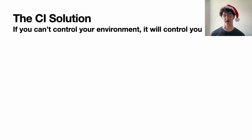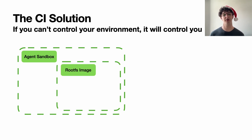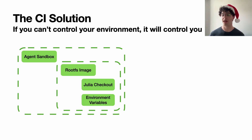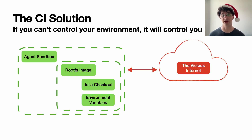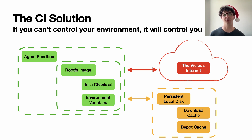What we've built so far is an agent that works inside of a sandbox that has within itself a smaller sandbox containing the rootfs image, within which we place the Julia checkout and control our environment variables — all completely reproducible. The only things that aren't reproducible are the internet, which is the source of quite a few still-existing failures on the base CI queue, and the local disk where we have a few persistent folders such as a download cache and a depot cache. We're still working out some of those bugs, but we're confident we'll be able to automatically detect them in the future.